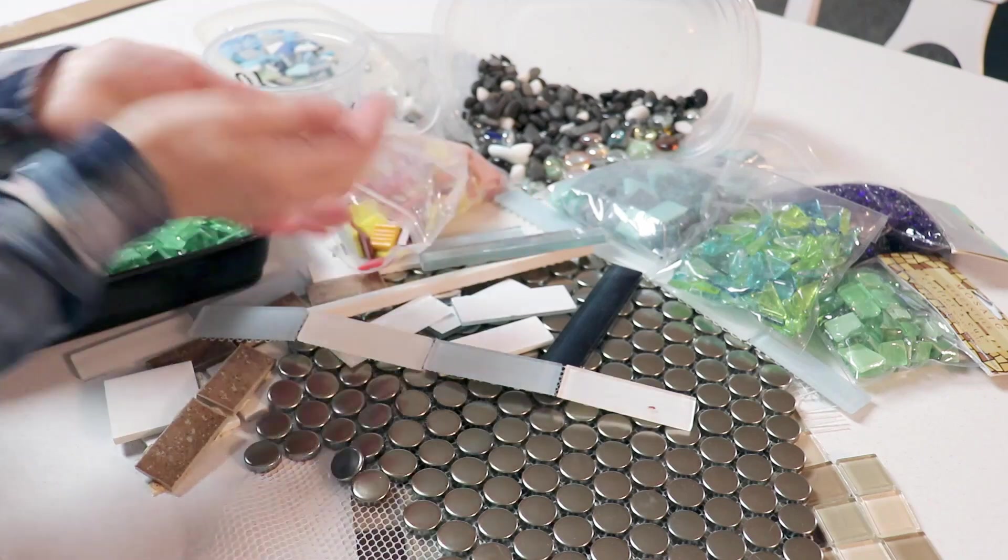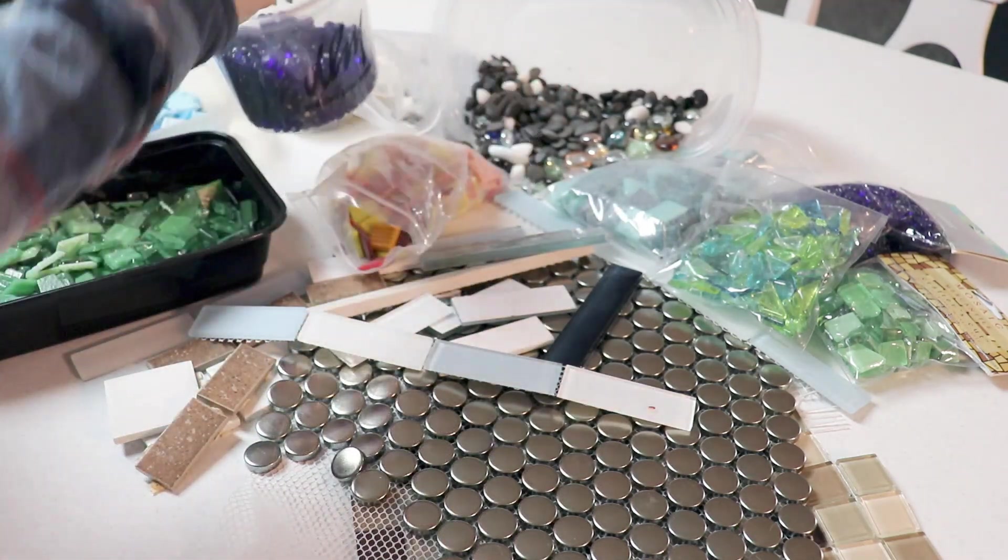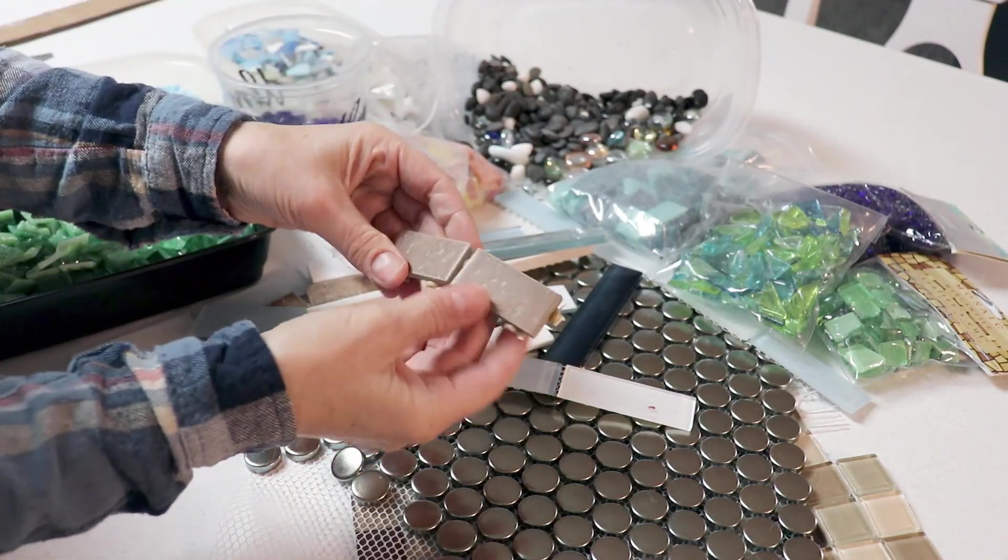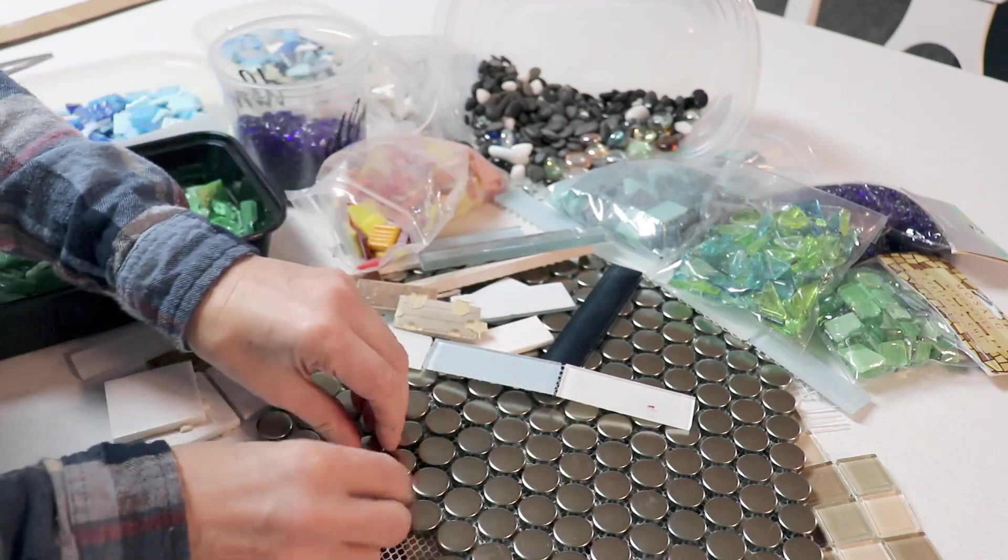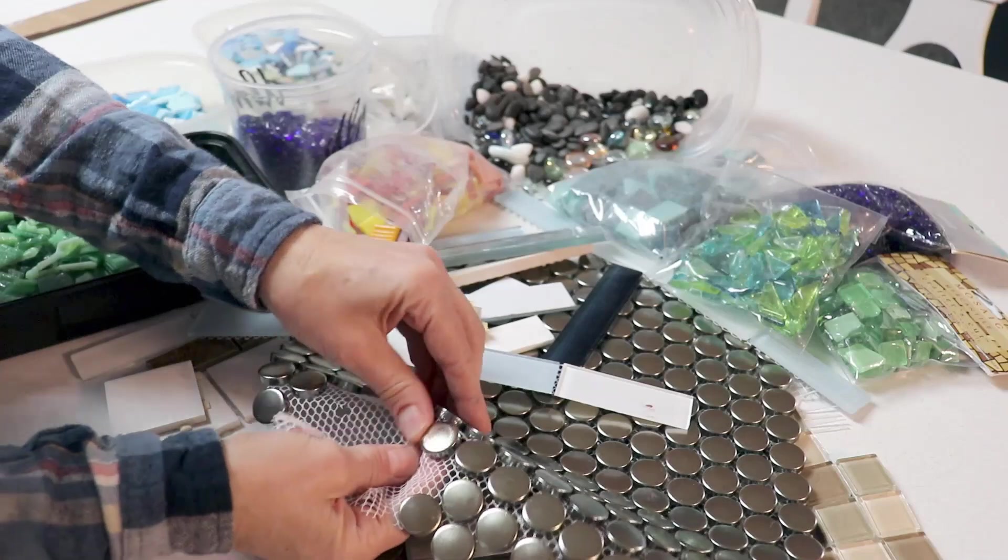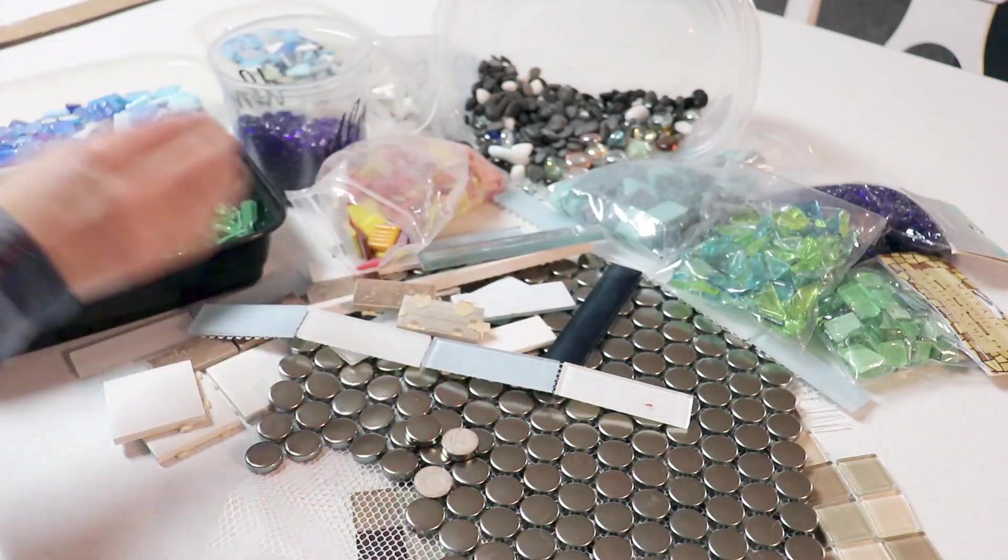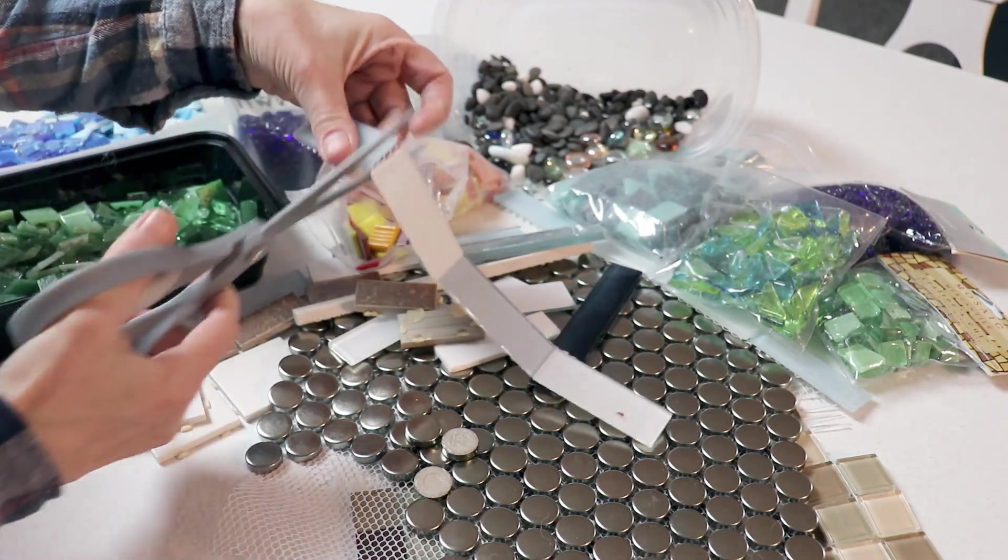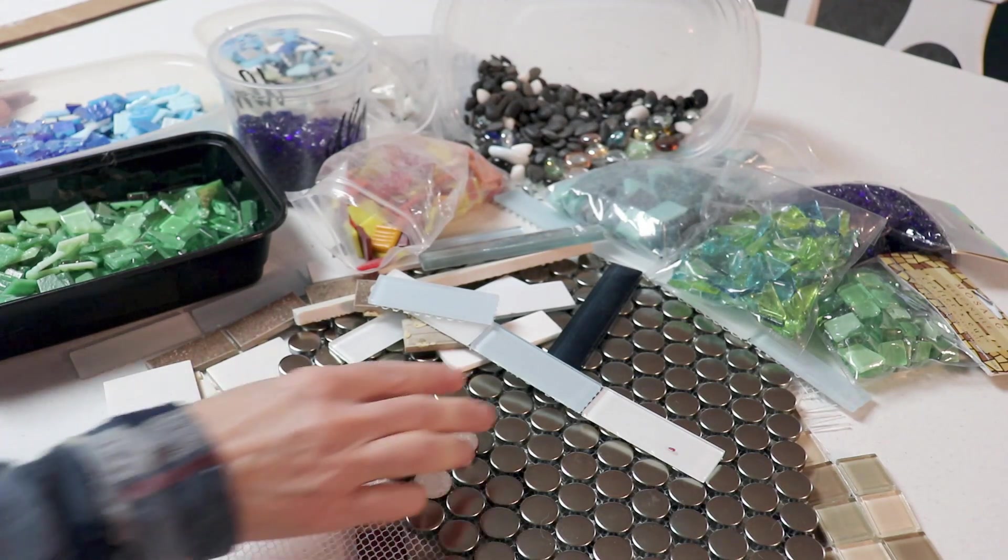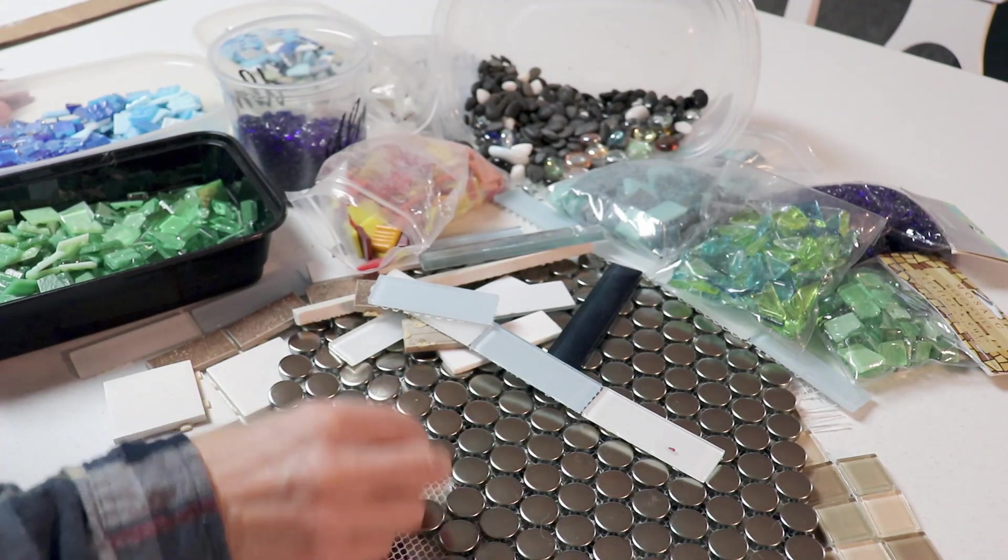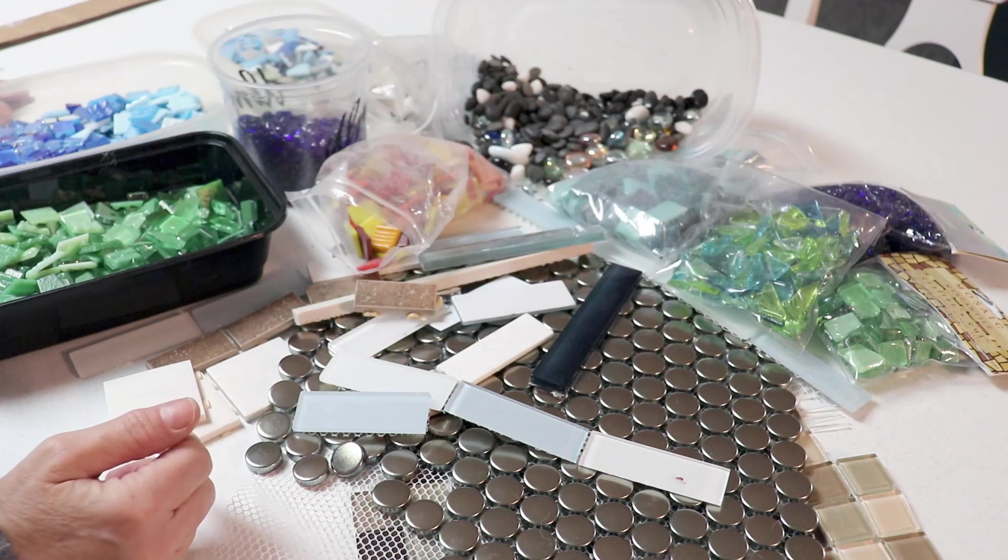You might want to scavenge tile from some of your old tile projects and cut it up, or buy sheets of smaller tiles and pluck them off the netting. You can also buy sheet tiles and cut them apart. No matter what you pick for your design, it's likely that you're going to need to cut it or break it up into smaller pieces or irregular chunks.